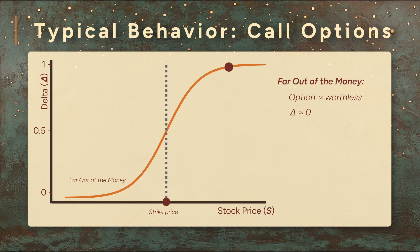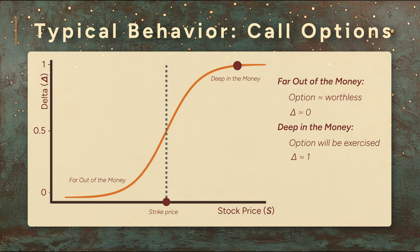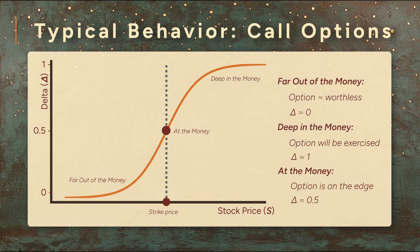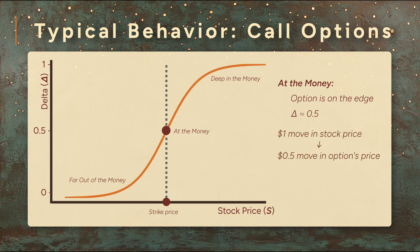Now let's jump to the other extreme: a call that's deep in the money. The option is almost certain to be exercised. If the stock goes up one dollar, the option's intrinsic value increases by exactly that dollar. In other words, its delta is about one. And now let's meet in the middle at the at-the-money call. The option is right on the edge — it's like a coin toss whether it will end up in the money or out of the money. That 50-50 probability of finishing in the money translates into a delta of about 0.5, meaning a one dollar move in the stock leads to about a 50 cent move in the option's price.